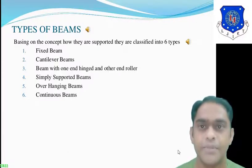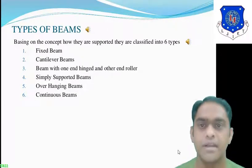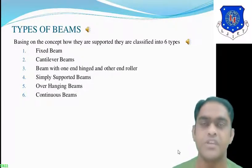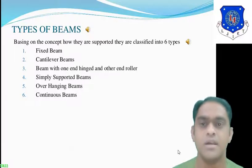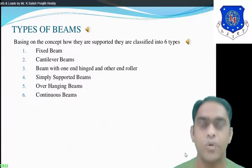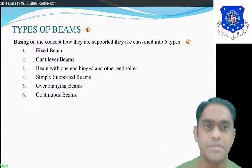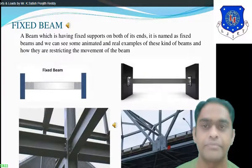There are mainly six types of beams: fixed beam, cantilever beam, beam with one end hinge and the other end roller, simply supported beam, overhanging beam, and continuous beam. Let us check them one by one.